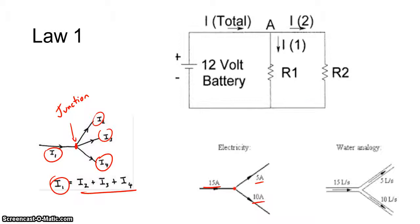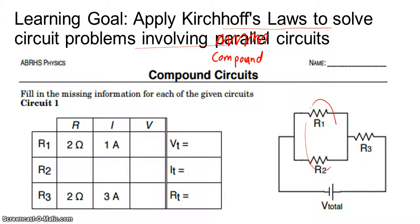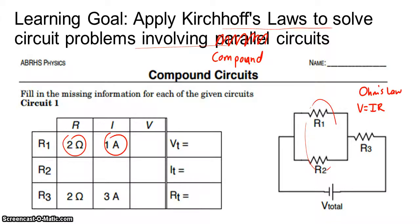We're going to use those two laws plus Ohm's Law, which says for an ohmic material V is equal to IR, to figure out these problems. So whenever you see you have two variables, we can always use Ohm's Law to find the third. V equals I times R: voltage would be 1 amp times 2 ohms, so we know our voltage is going to be 2 volts.